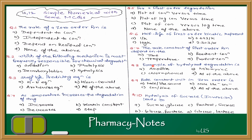Question 8: example of hydrolytic degradation is — which drug undergoes hydrolytic degradation? Question 9: rate constant unit in zero order is? As we studied, it is concentration upon time. Concentration upon time can be written as molar per liter·second, or mole·liter⁻¹·second⁻¹. All three expressions are correct, so the answer is: all of the above.